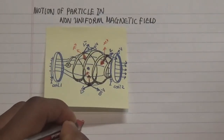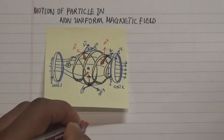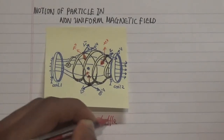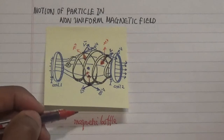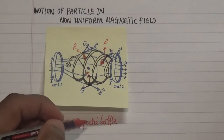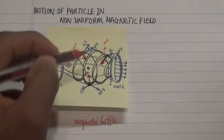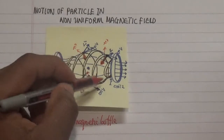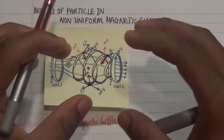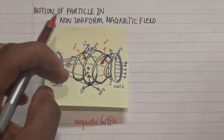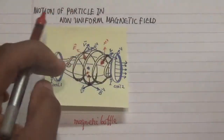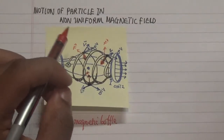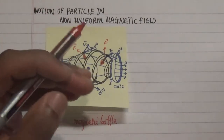This particular configuration is known as the magnetic bottle. It is called that because charged particles can be trapped in this situation, and the magnetic field reveals itself through the motion of the charged particle going back and forth.